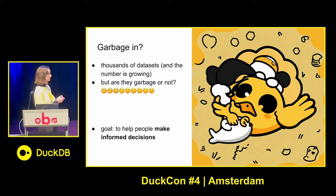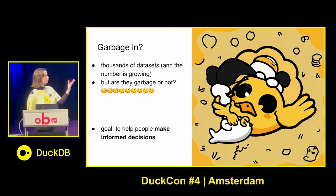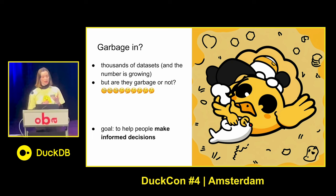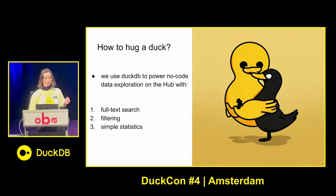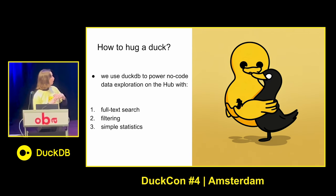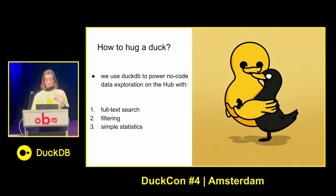We can use DuckDB to query every public dataset on the Hugging Face Hub, but there are tons of datasets — how do we know if they are garbage or not? Like with this image, we can clearly see it's just garbage input for machine learning models. Our goal is to make it equally easy to understand data quality for complex datasets. We want to help people make informed decisions about what data to use. And we are doing this with DuckDB. Specifically, we implemented three features on the Hugging Face Hub: full text search for text, SQL-like filtering, and statistics.